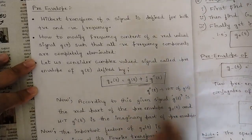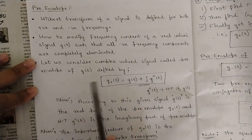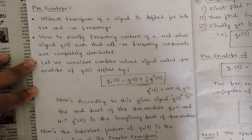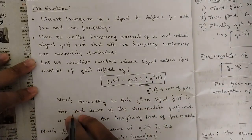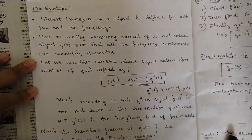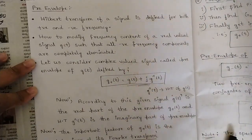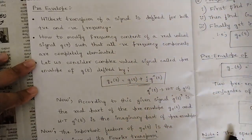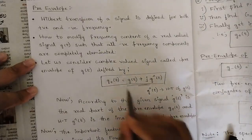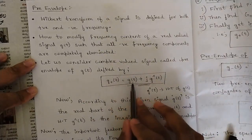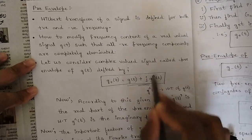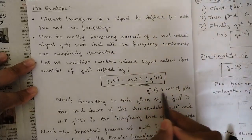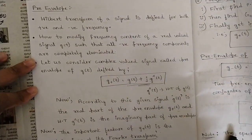Let us consider a complex-valued signal called the pre-envelope of G(t), defined as G+(t). We write only G+(t) because we are considering only the positive frequencies, and negative frequency components are completely eliminated using the circuit called the envelope detector. G+(t) is equal to G(t) plus j·Ĝ(t). This is called the Hilbert transform, where Ĝ(t) is the Hilbert transform of the function G(t).